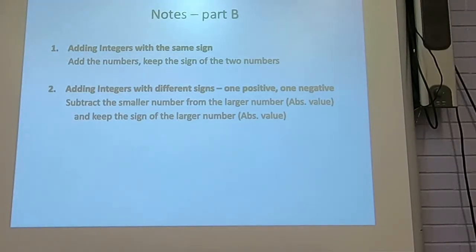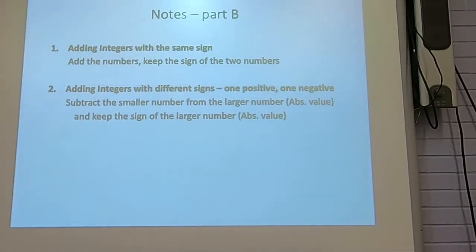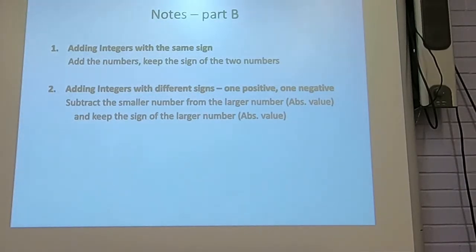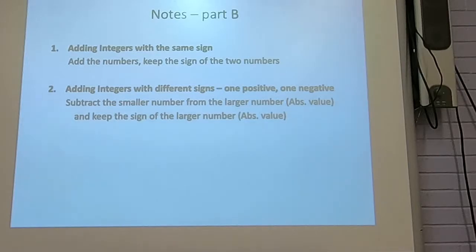So basically you're doing two things. Number one: adding integers with the same sign. This is now the rules for what we were doing on the number line. So when they have the same sign, you just add the numbers and you keep whatever the sign is.